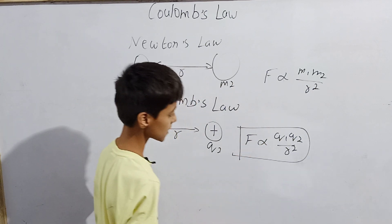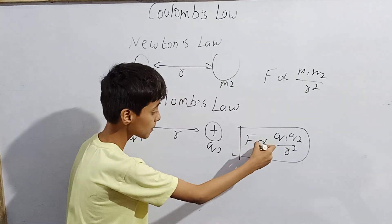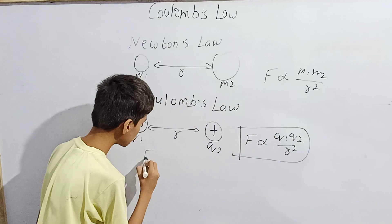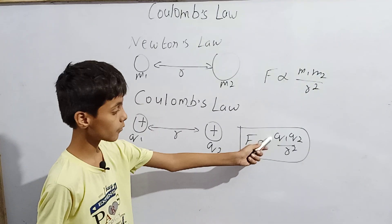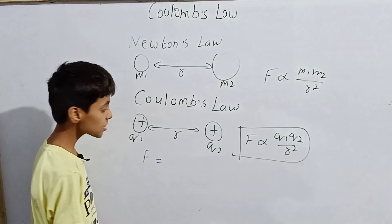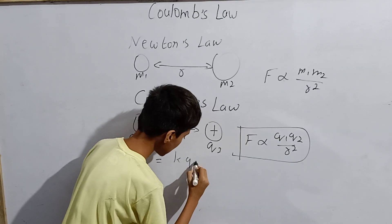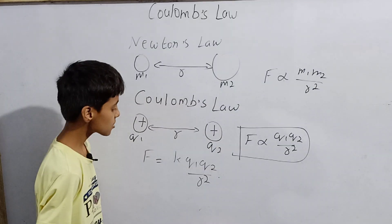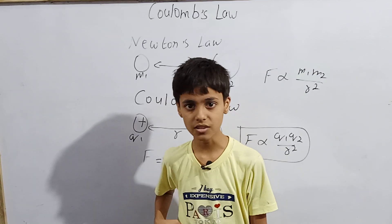Now about the equation: when we replace the proportionality sign with an equals sign, a proportionality constant comes in. Let that constant be named K. So F equals K times Q1×Q2 divided by R². That is the equation: F = K × Q1Q2 / R².